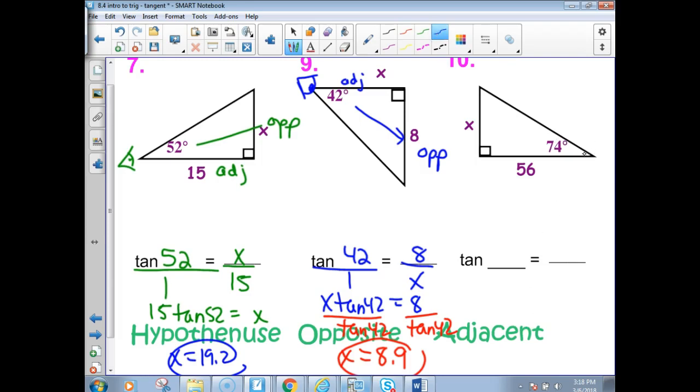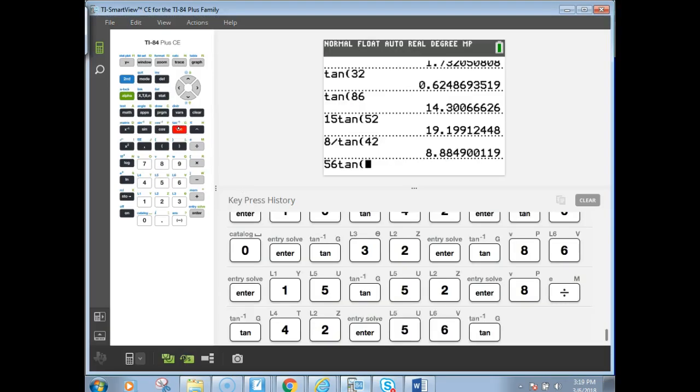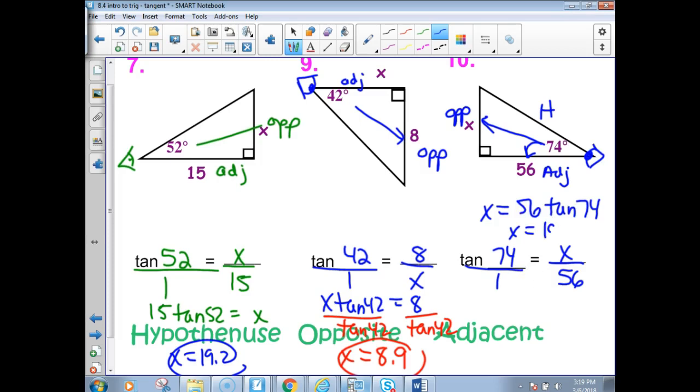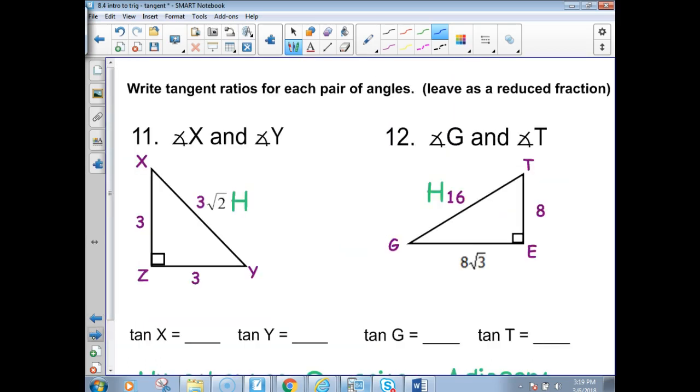On the next one, you're looking from the 74. Across from 74 would be your opposite leg. Next to it would be your adjacent leg. This one's the hypotenuse and we're not using it. Tangent of 74 equals x over 56. Cross-products, 1 times x. x equals 56 times the tangent of 74. I figured I had some room up here. I should have used it. And then I can get my answer by just typing. 195.3 this time. Obviously, these drawings are not to scale.